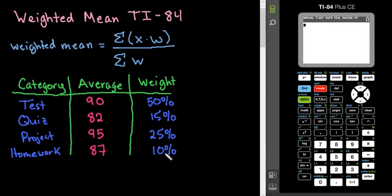In this case, because our weights add up to 100% or 1, we are dividing by 1. It does not matter how you put it into your calculator. You can either put this in as 0.5, 0.15, 0.25, 0.10, or you can put it in as 50, 15, 25, and 10.